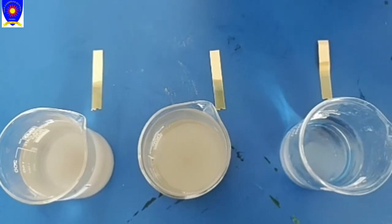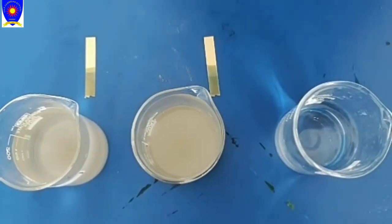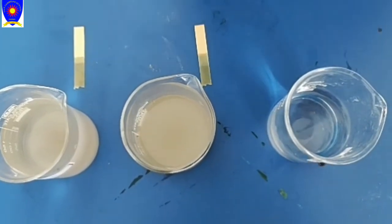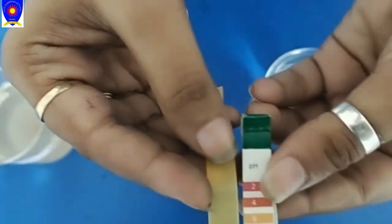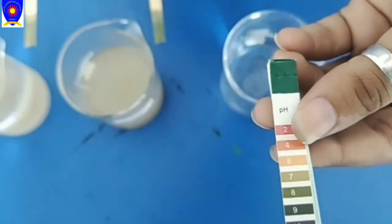So as you can see, this one is your RO water and it's almost neutral because the reading is almost like a 6, so it's neutral. You can see that color has not been changed. So it's 6 only, it's neutral.